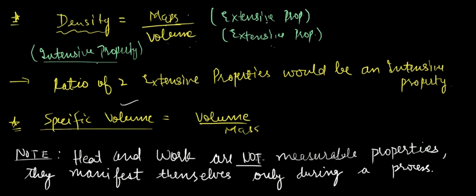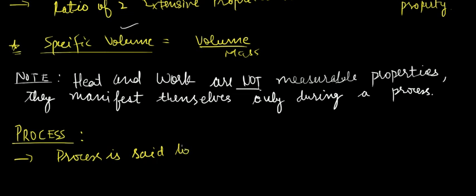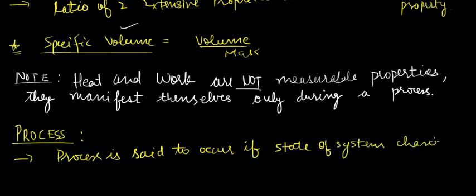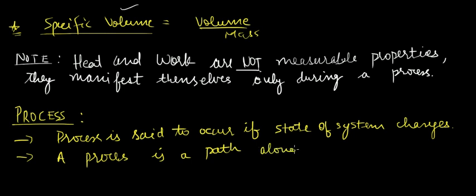Now let's see what a process is. A process is said to occur if the state of a system changes. A process is a path along which a change of state takes place.